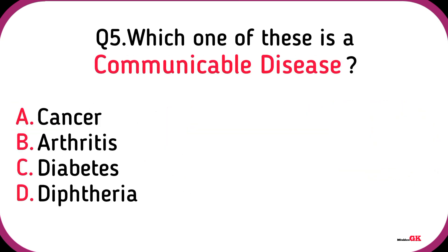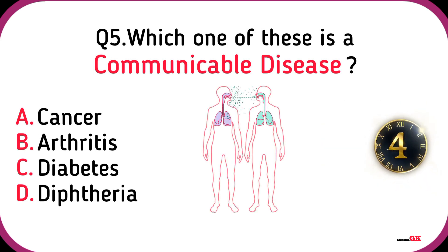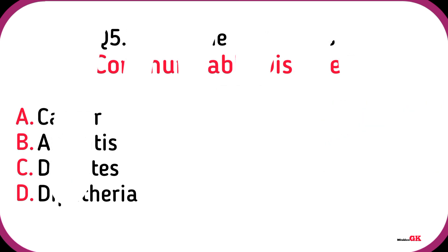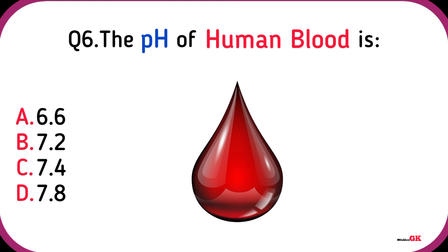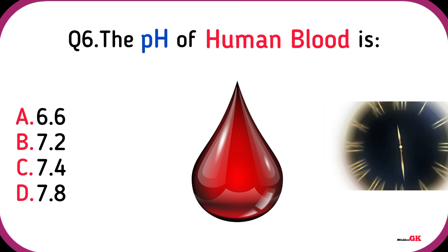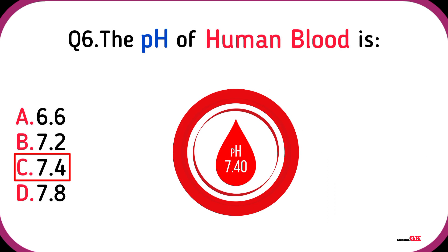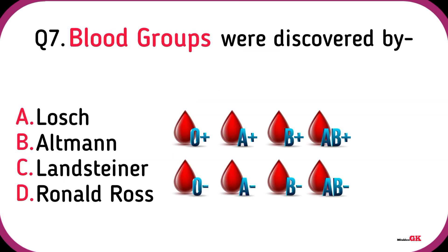Jaundice is caused due to the infection of the liver. Which one of these is a communicable disease? Diphtheria. The pH of human blood is 7.4.